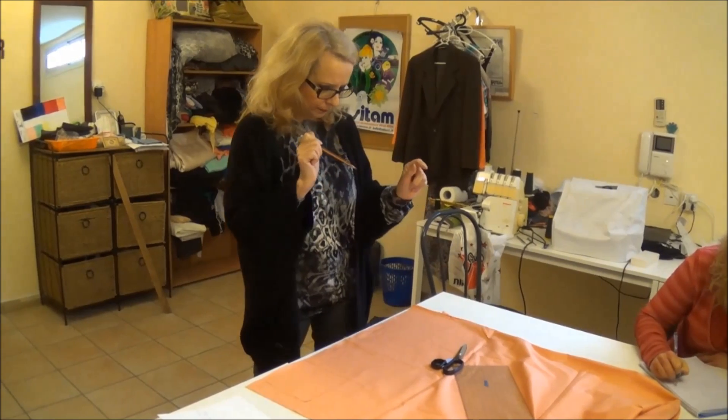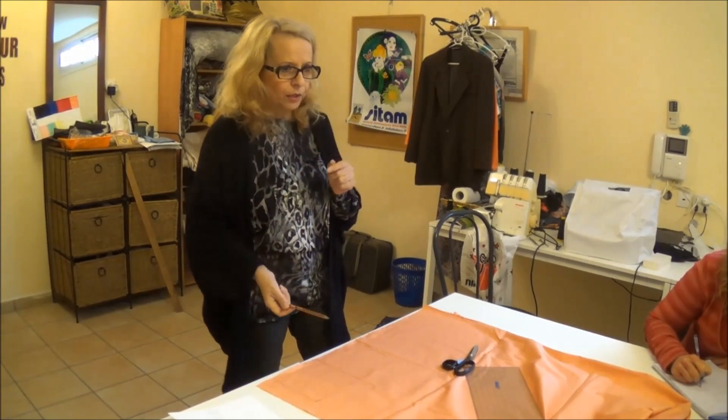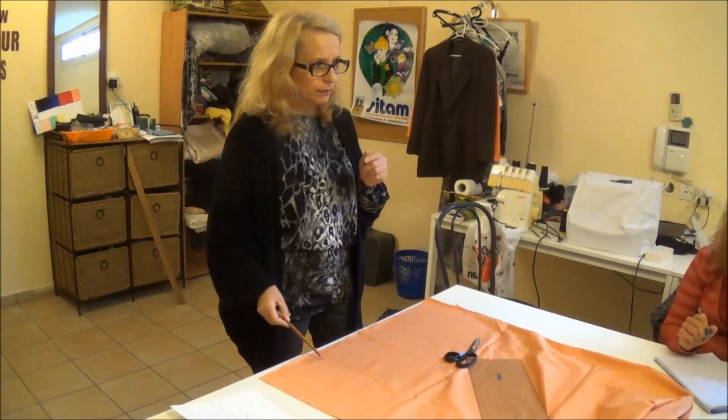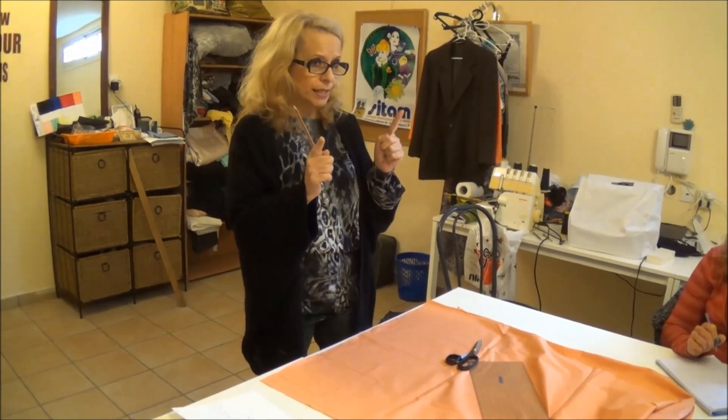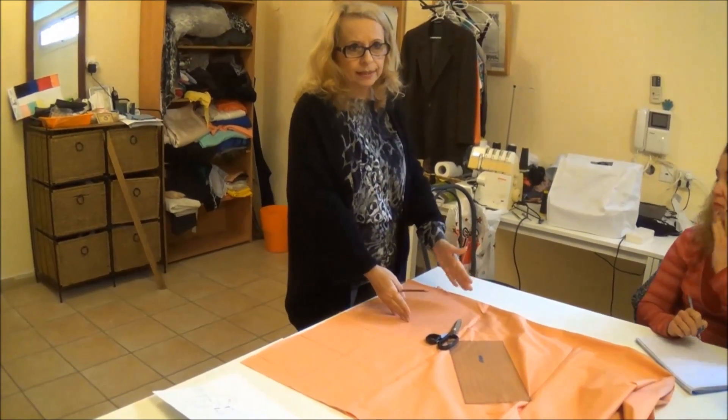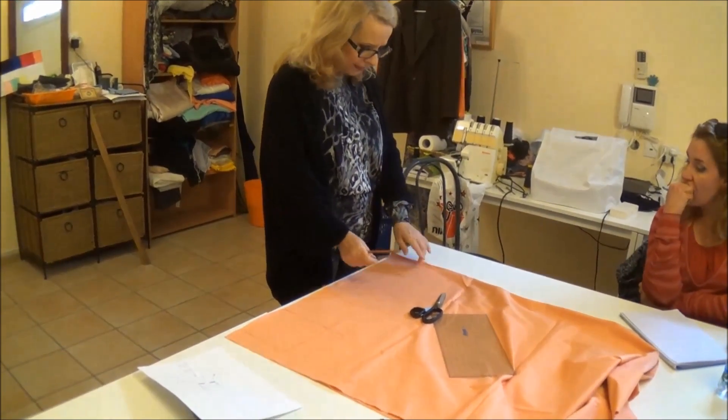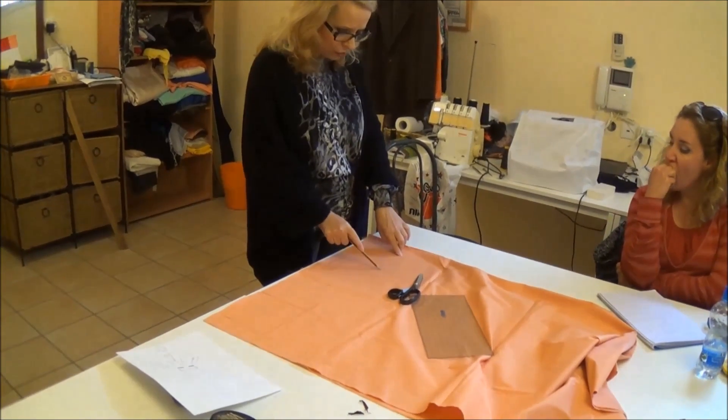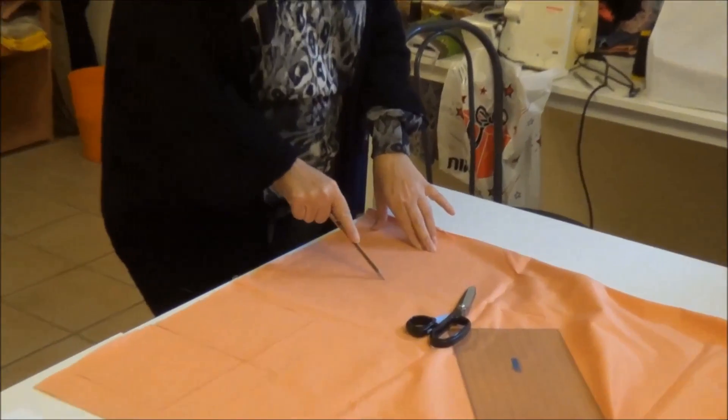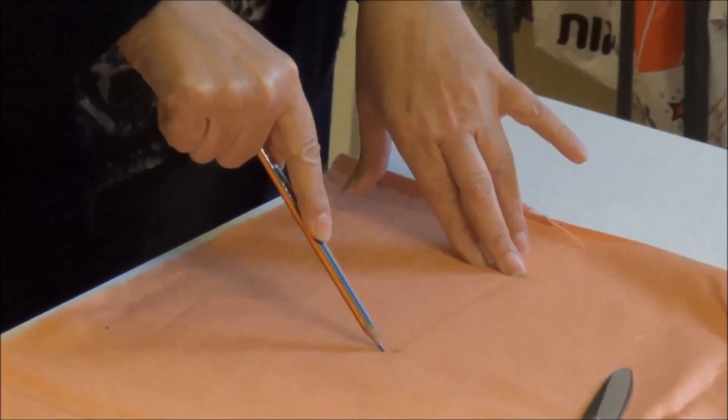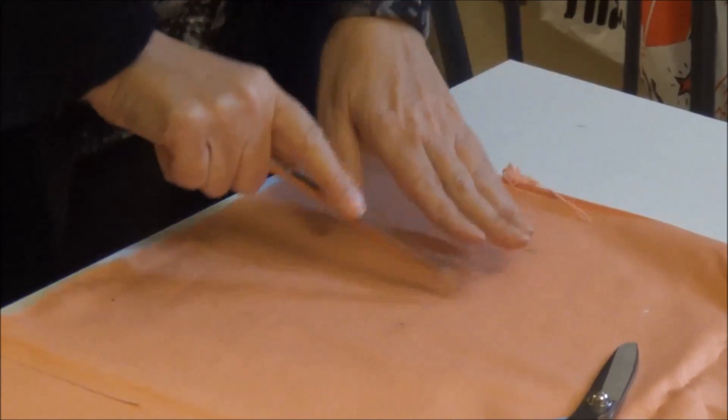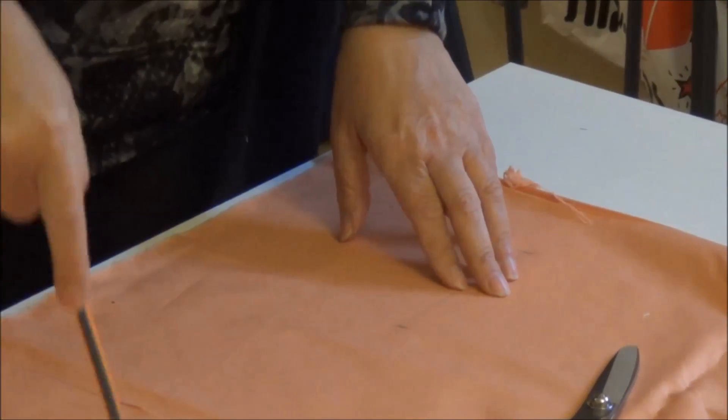Per cui abbiamo detto che il listino sarà della larghezza della tasca interna più 1 cm di cuscitura, mentre il segno sulla giacca sarà soltanto della larghezza netto della tasca, che potrà essere orizzontale o leggermente obbliqua, dipende dal modello che noi abbiamo.